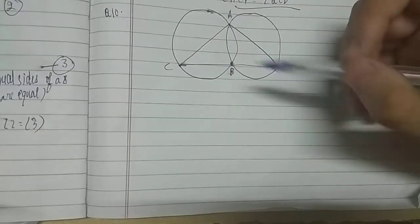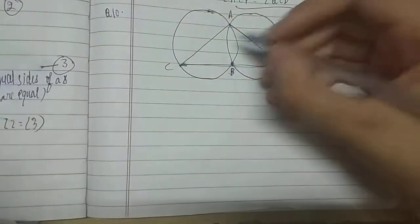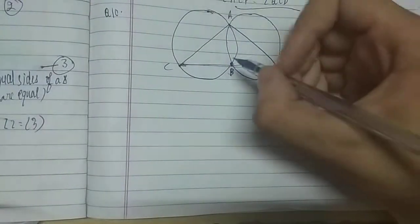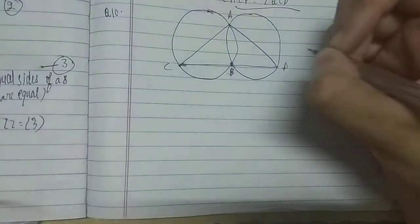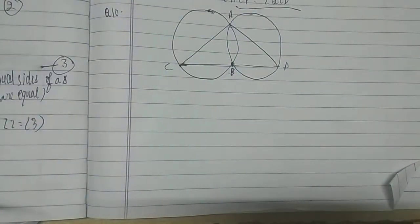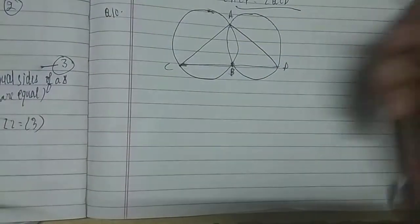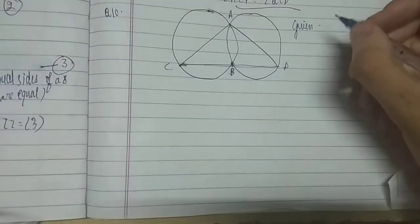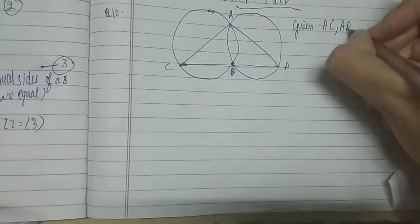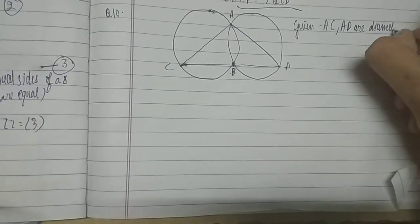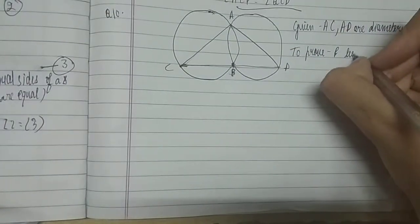The third side of the triangle is CD. So if we prove that CBD is 180 degrees — that is, if we prove it's a straight line — then we automatically prove that the point of intersection lies on the third side. So we have to prove that CD is a straight line. Given: AC and AD are diameters.